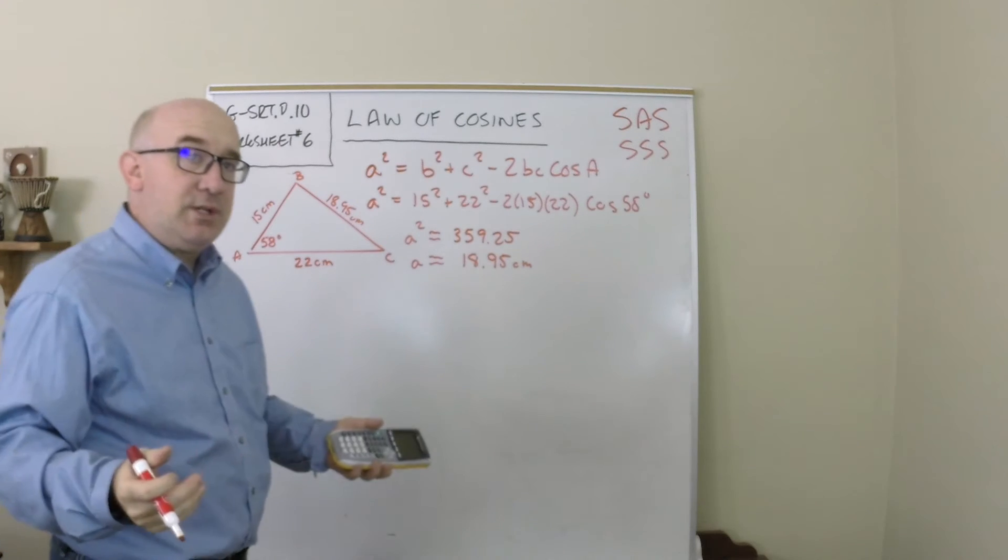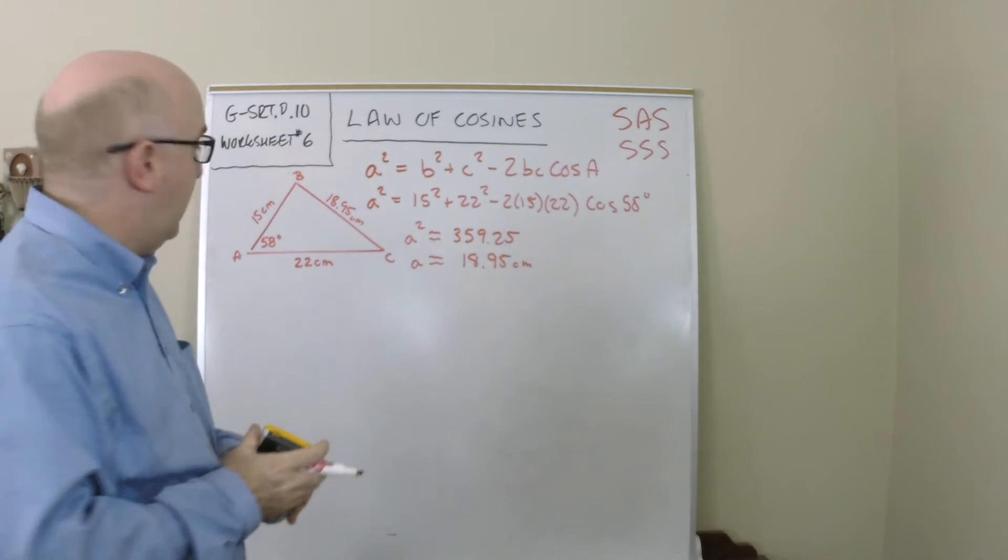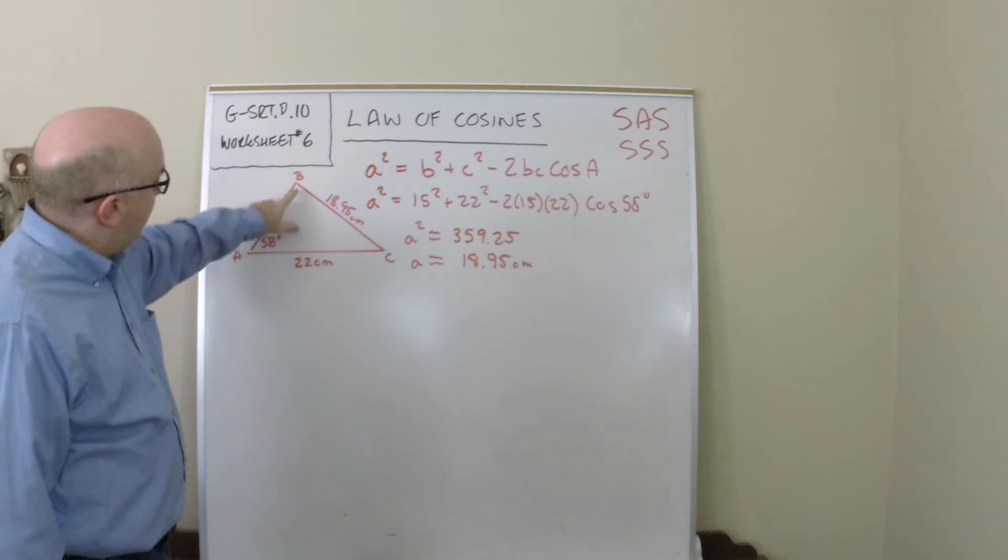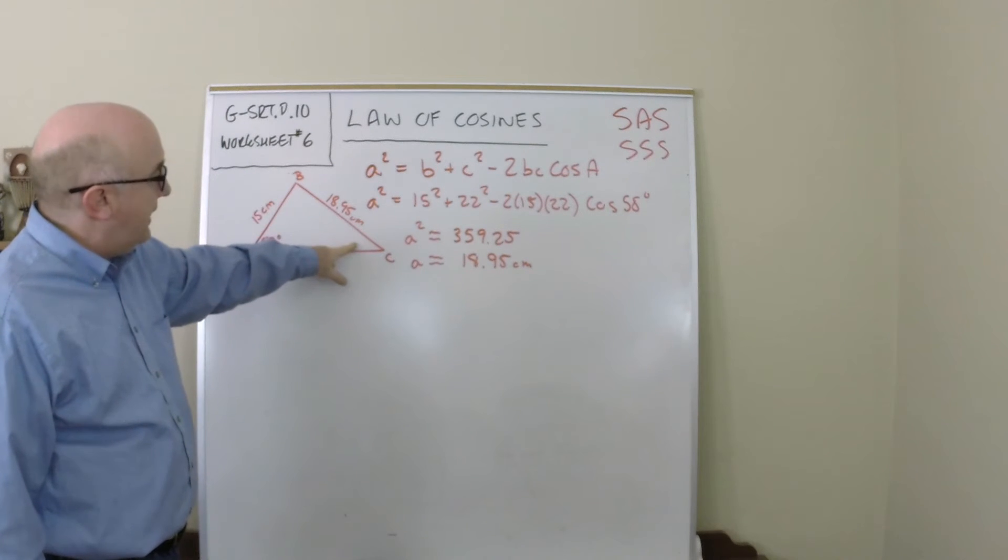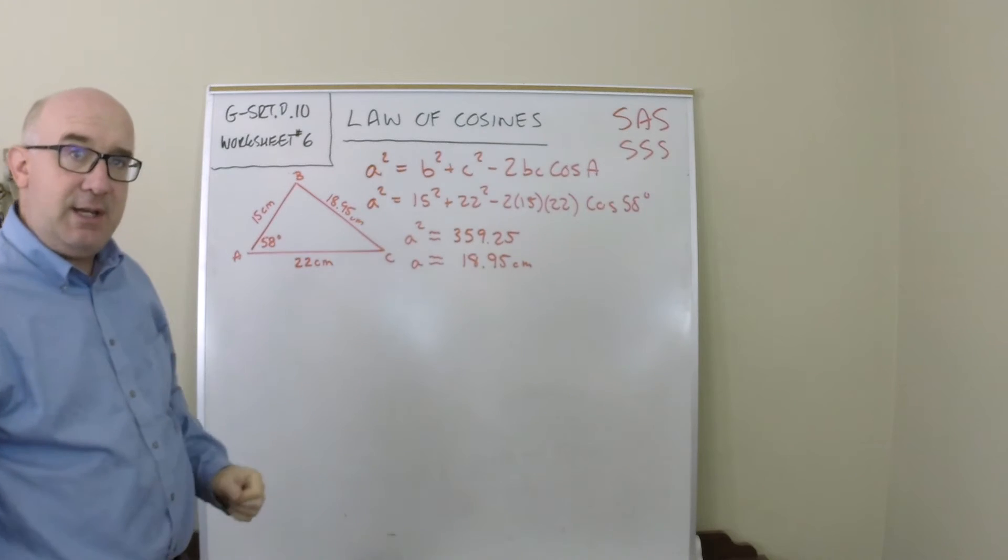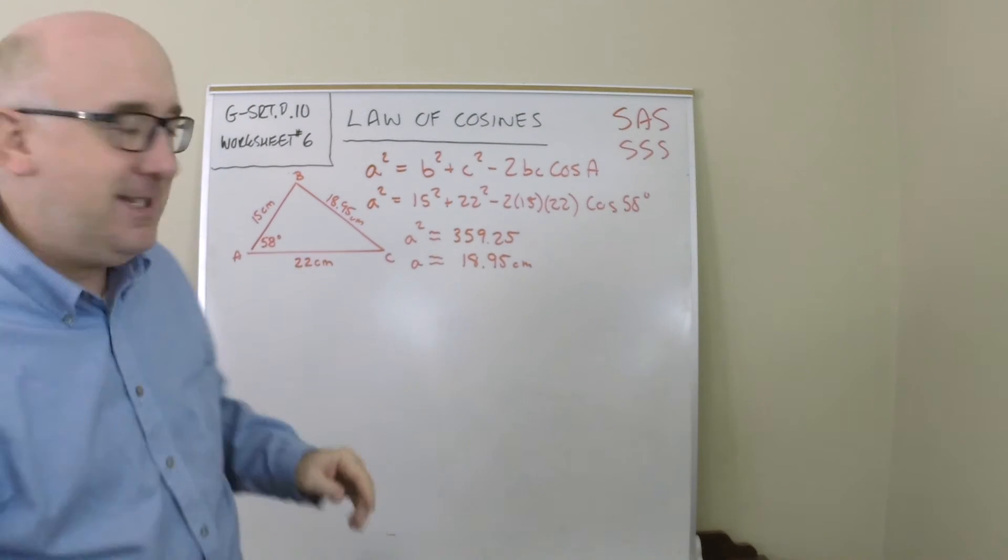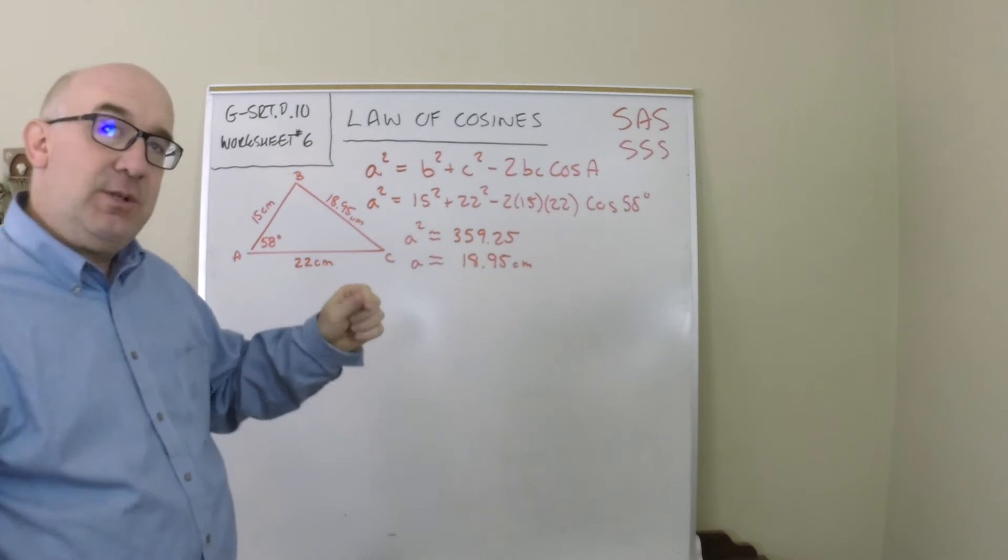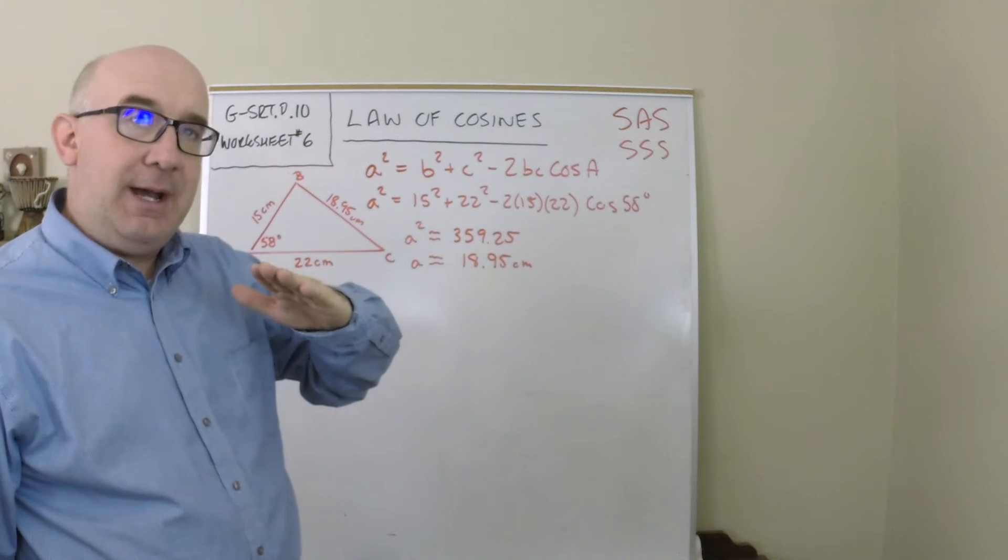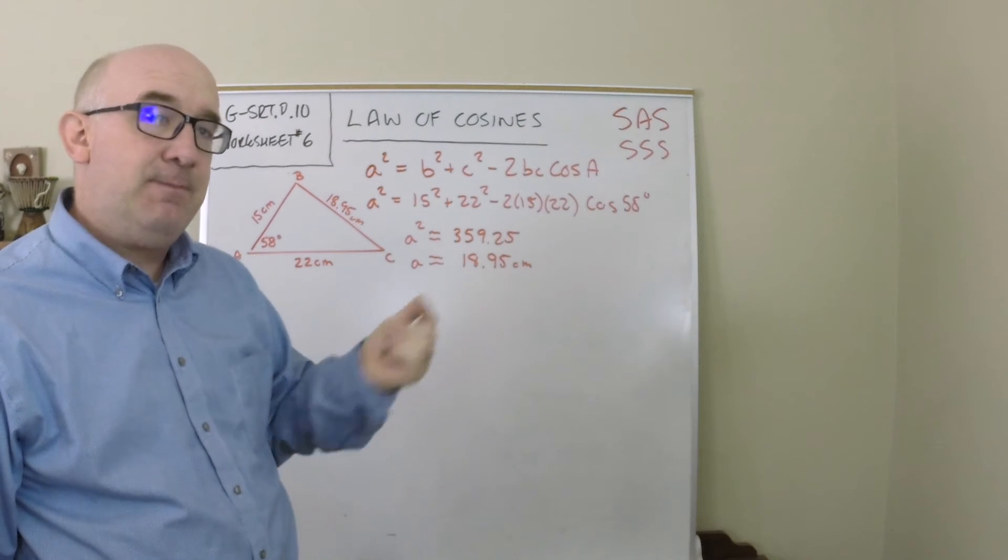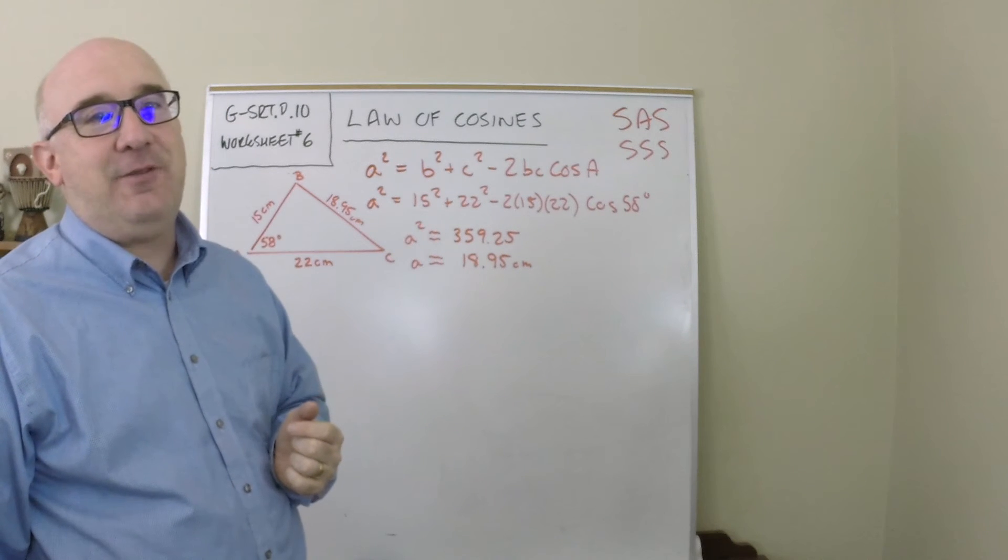So I now know that this is 18.95. Now I want to always solve for the rest of the triangle. Now I need a new angle. Do I go for angle B or angle C? The law of sines, if you remember as we discussed it, one of the issues it has is that the values in quadrant 1 for sine are equal to the values in quadrant 2 for sine. And so it's actually kind of hard to distinguish.